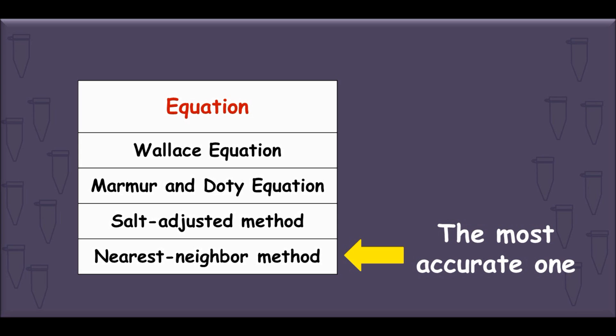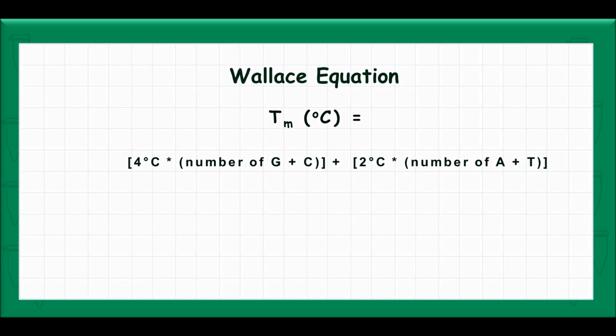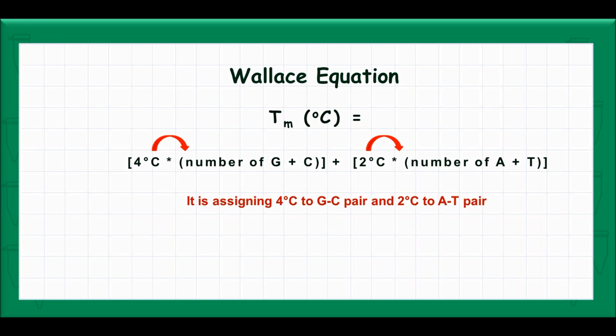We are going to explain the nearest neighbor method in the next lecture. The Wallace equation estimates the melting temperature only based on the nucleotide composition of the primer. The equation assigns 4 degrees Celsius to guanine and cytosine, and 2 degrees Celsius to thymine and adenine.